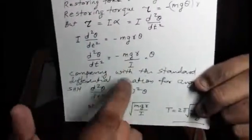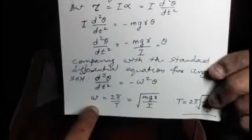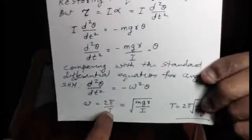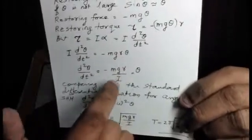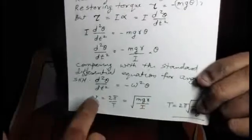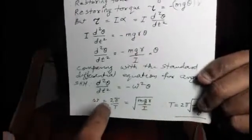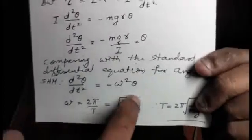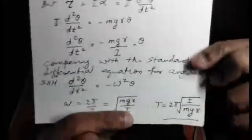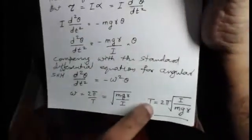That means the rigid body executes simple harmonic motion about the fixed axis AOA dash. The period of this oscillation: omega equals 2pi over T, and omega squared equals MgR over I, so the period T equals 2pi times root of I by MgR. This is the inertia factor divided by the restoring factor.